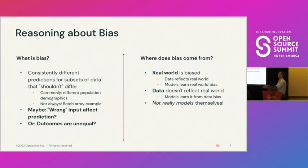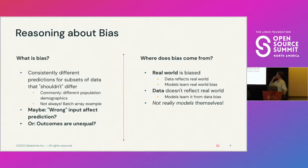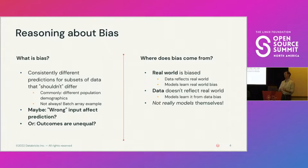Models that learn from biased data might learn to repeat that unfairness — that's unfortunately where a lot of the bias we talk about comes from. It can also come from the data itself being incomplete or inaccurate in ways that affect how models behave. I don't think it's really the models doing the biasing. The models themselves can actually be the heroes in this story — they can be used to help detect and correct some of the biases we've learned from the real world or through the data collection process. So I try not to say 'model bias' — it's more accurate to say bias in the machine learning process or outcomes.